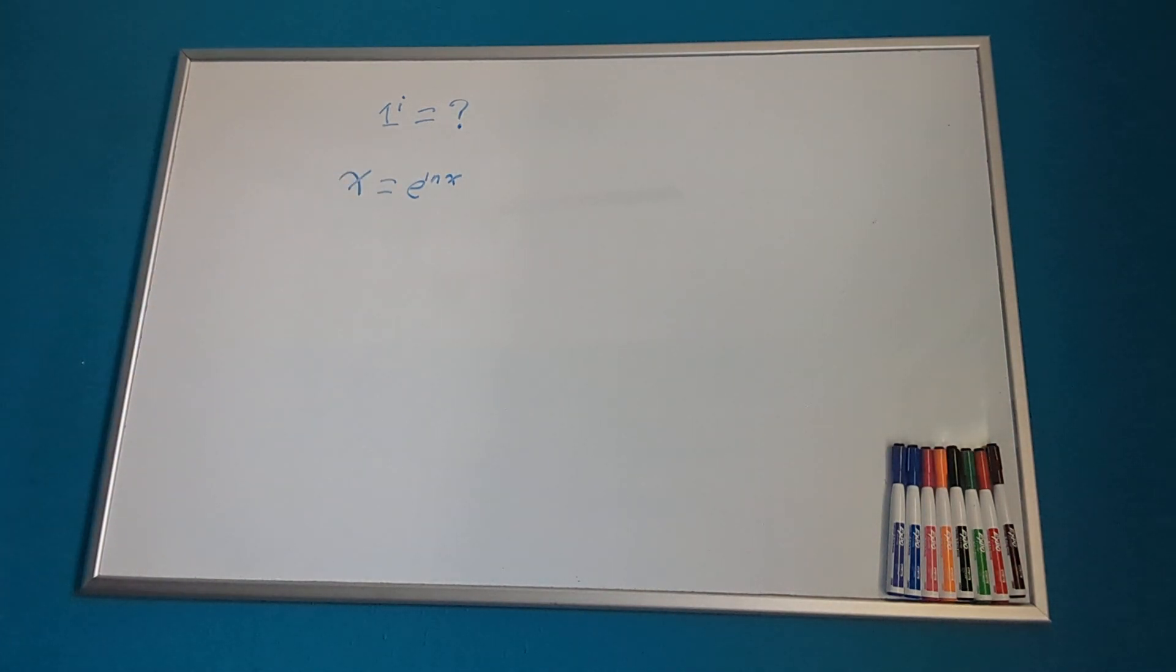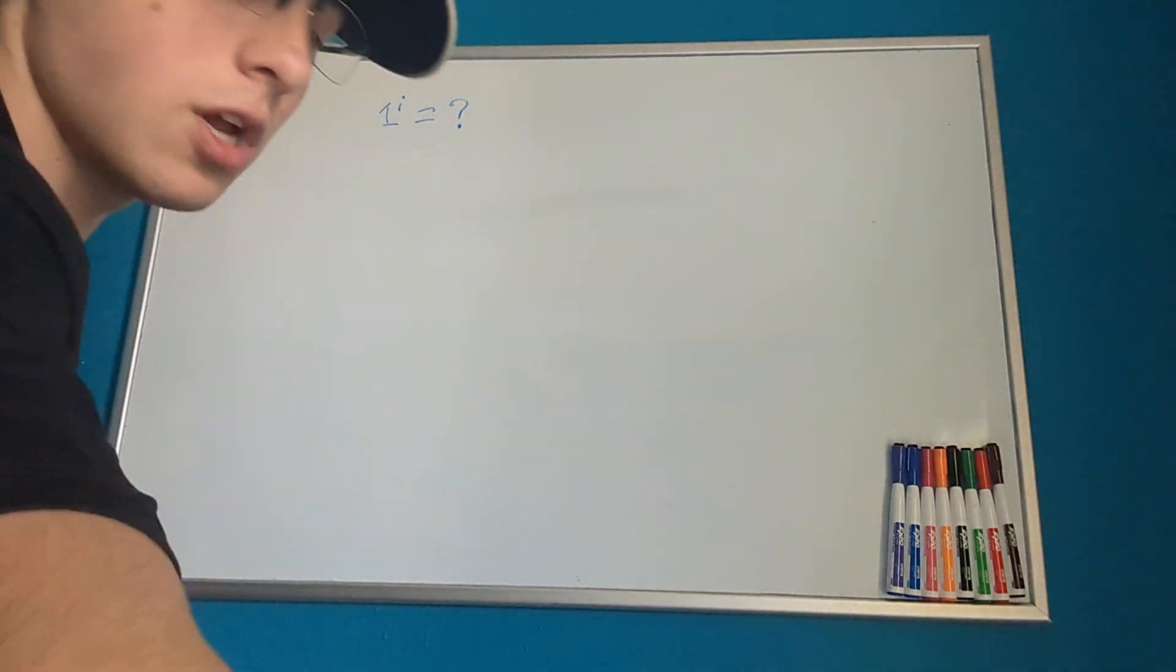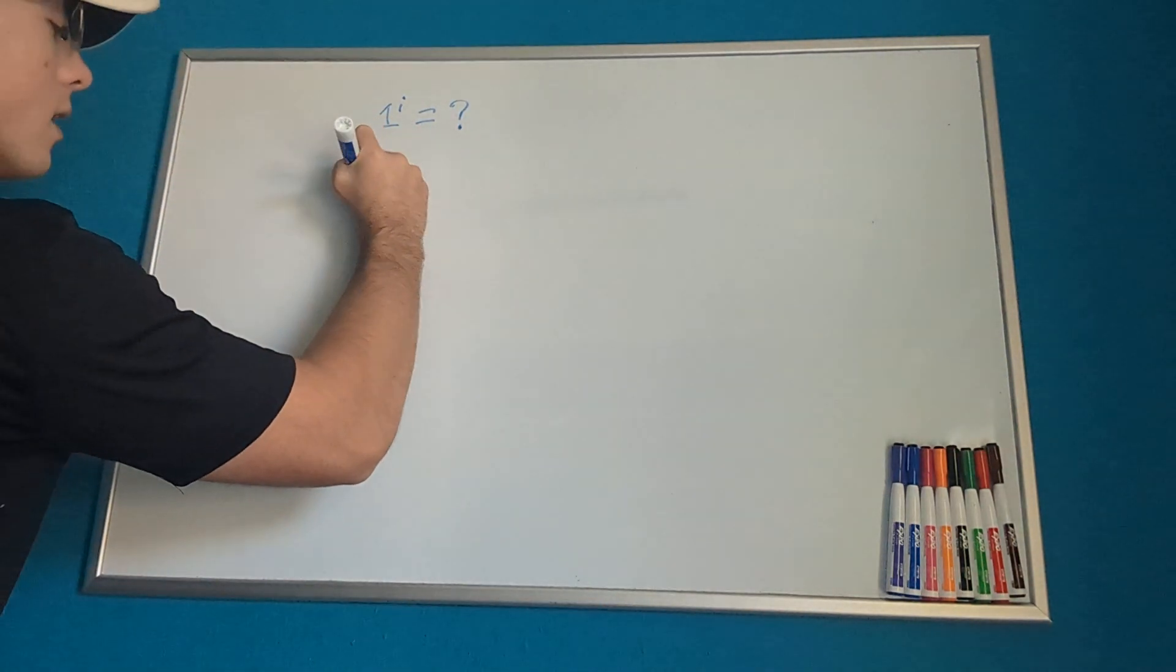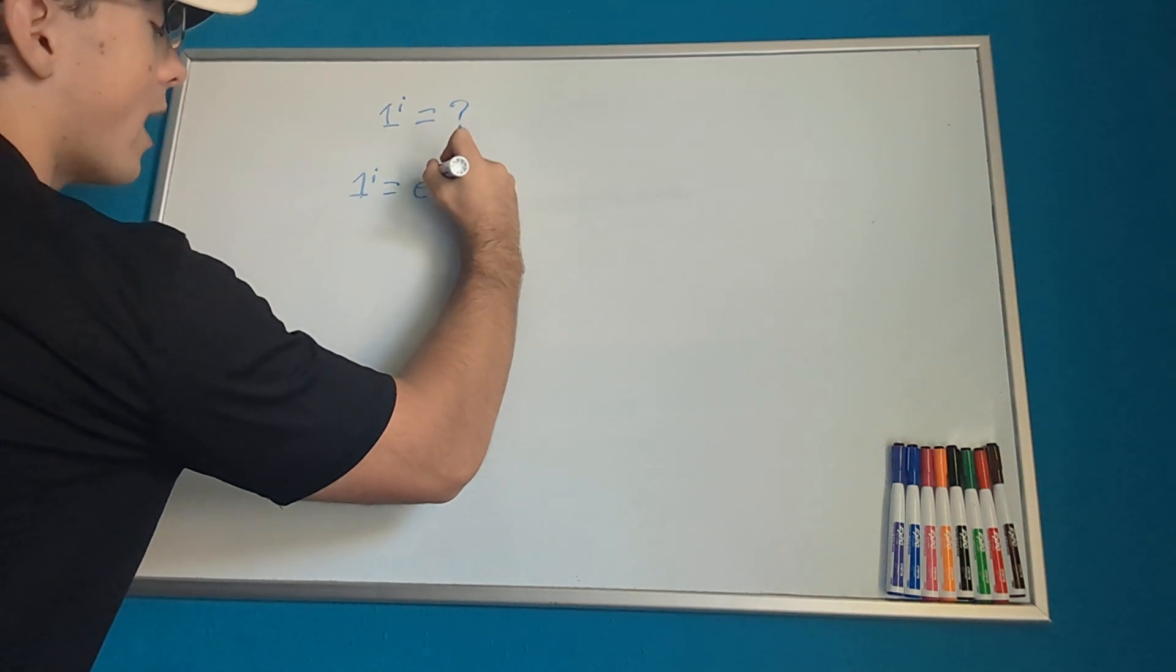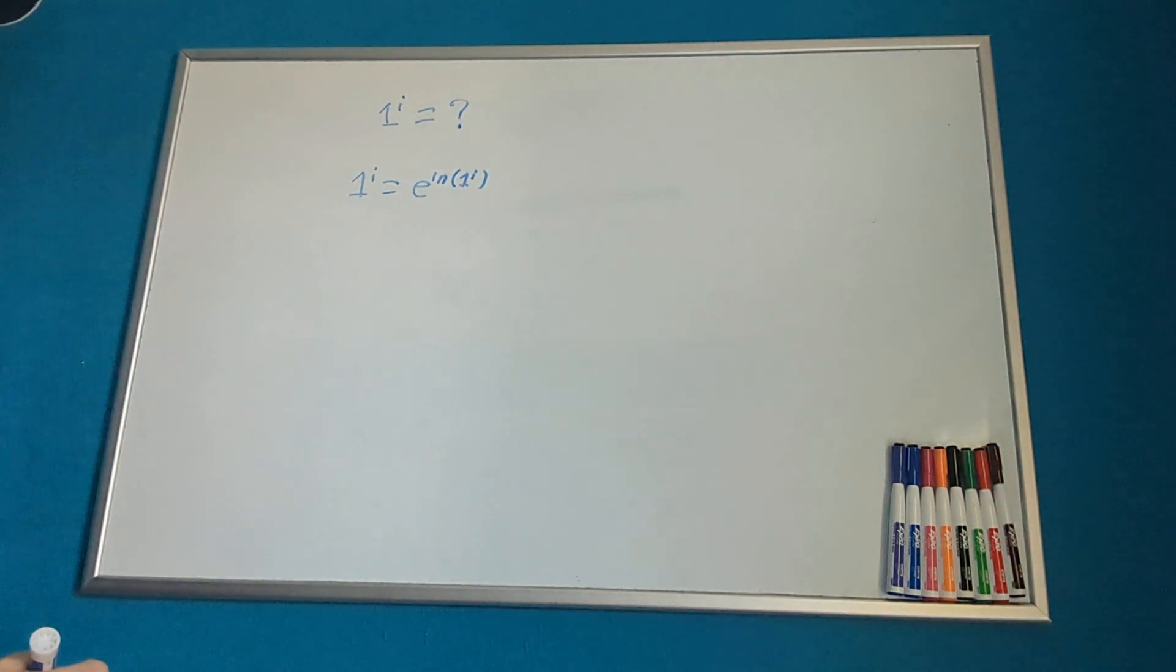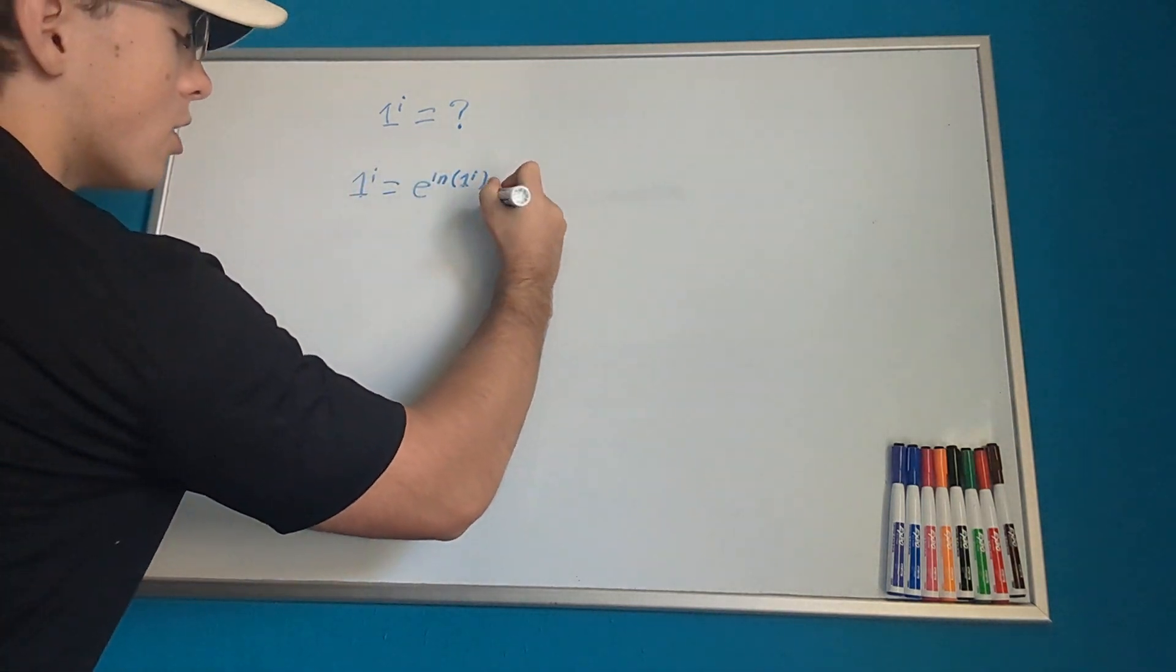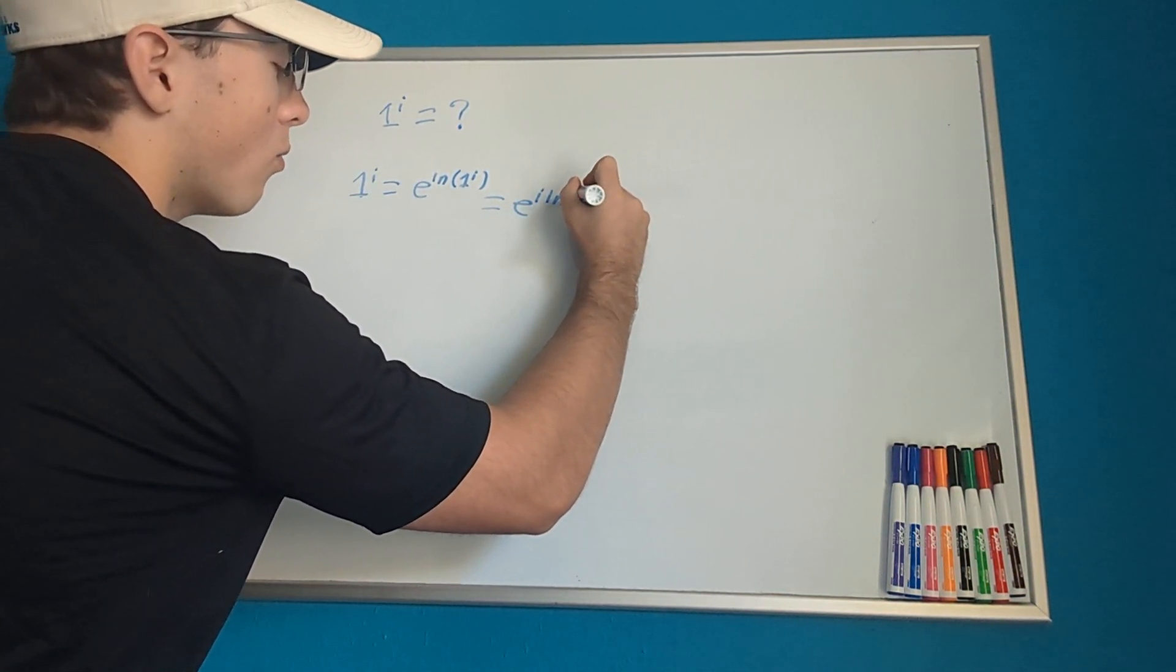So let's try to do that with 1 to the power i and see where we can arrive at. So 1 to the power i equals e to the natural log of 1 to the power i. Then we know the power rule. We can take i out. So that equals e to the i times natural log of 1.